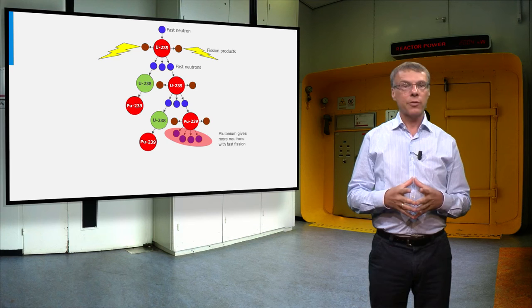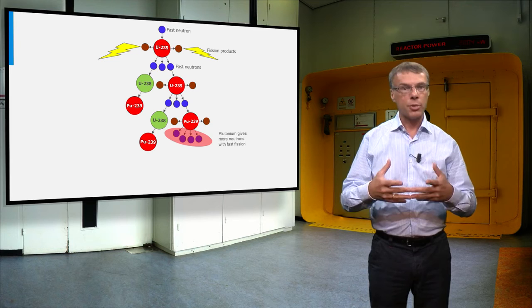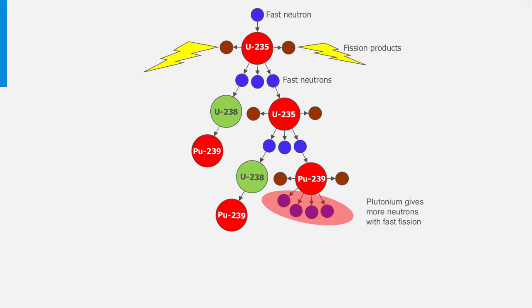Here we see the scheme for the fission chain reaction for a reactor fueled with uranium-235 and own bred plutonium-239. I want to emphasize one important thing. We have seen that the plutonium isotopes produce more neutrons in a fission event if the neutron that causes the fission has a higher energy. This is highlighted at the right bottom part of the plot.